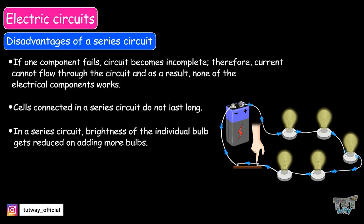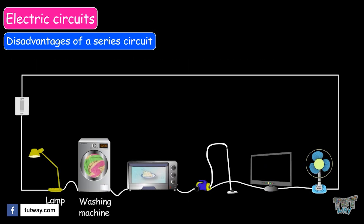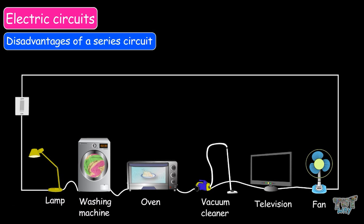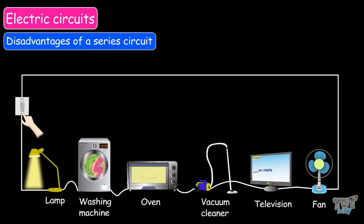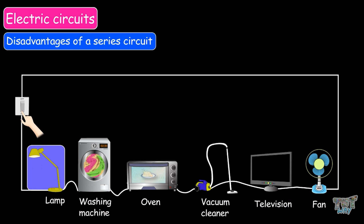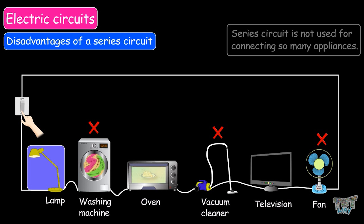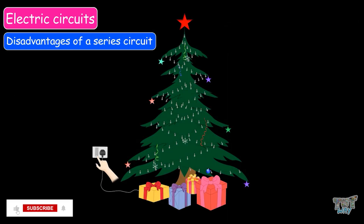Can you imagine a place where you only need to use one switch to turn on a lamp, washing machine, oven, vacuum cleaner, television, and even a fan? This would be a place where all the electrical devices are connected in series, and you can just use one switch to turn everything on or off. But the disadvantage is: if the lamp gets damaged, nothing would work — not your fan, your machine, nor your vacuum cleaner. This is why a series circuit is not used for connecting many appliances. They are mostly used for strings of lights, like Christmas tree decorations, where you need to turn on all lights with one switch.